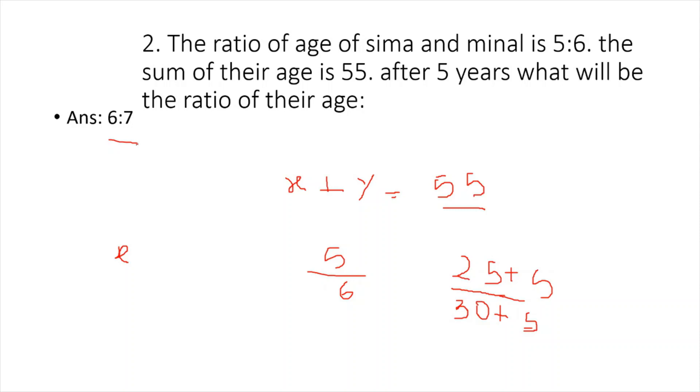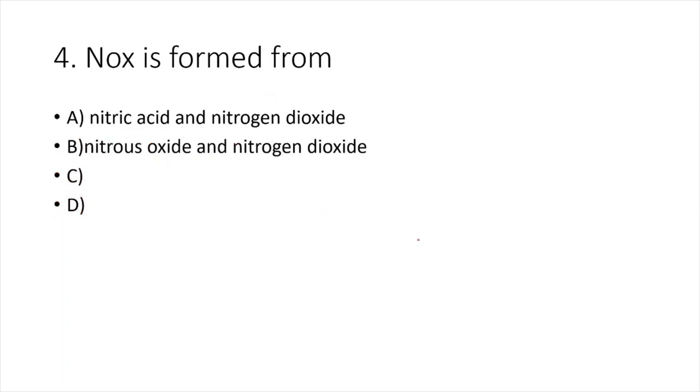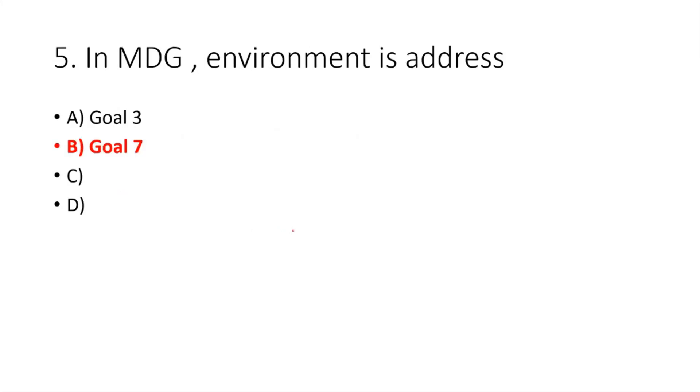Very simple questions are there. Question 3 has given happy and unhappy states related to utility and different agents; option B is the correct answer. Question 4: NOx is formed from nitrogen oxide variants, so the answer may be nitrous oxide and nitrogen dioxide. Question 5: in Millennium Development Goals, environment is addressed at goal 7. The questions are collected from different students.